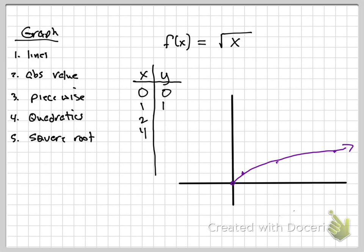So if I ask you what the domain is, be careful — the days of negative infinity to positive infinity are done. The domain would be zero to infinity, including zero. And the range would also be zero to infinity. That would be your domain and range. The key point for graphing square root functions: the first thing you do is find what makes the inside zero. That is your starting point.